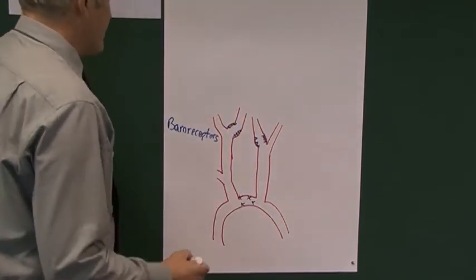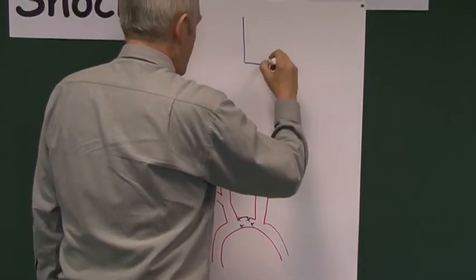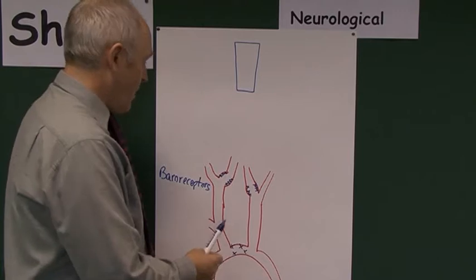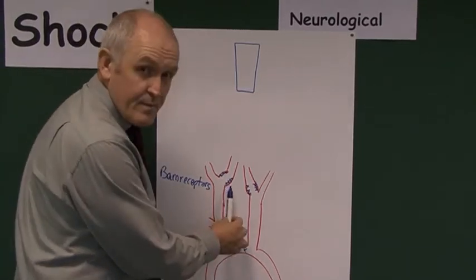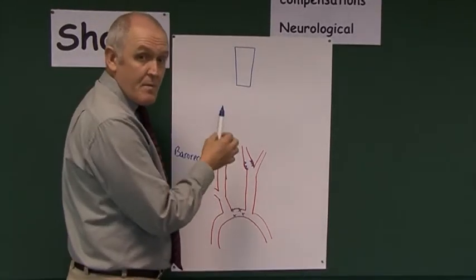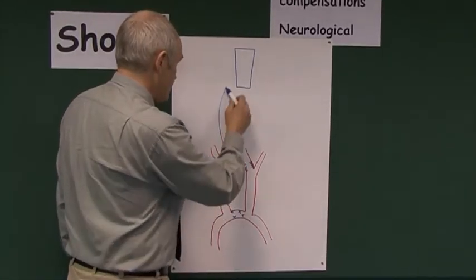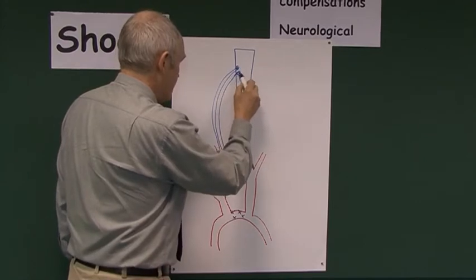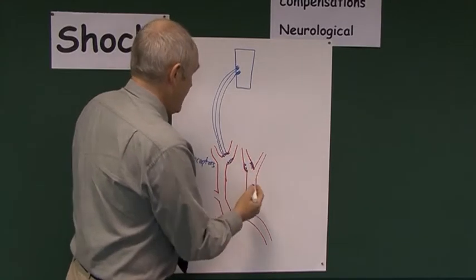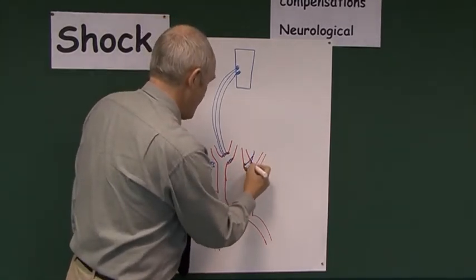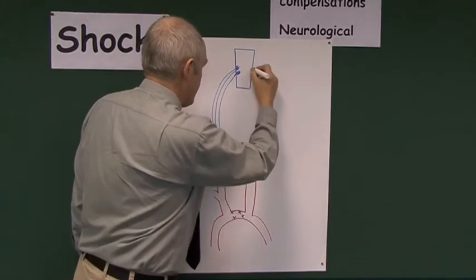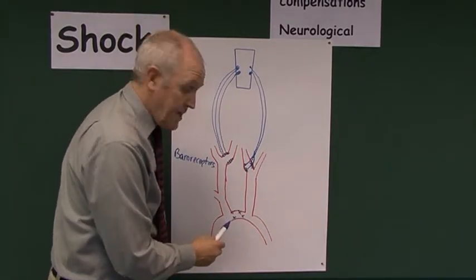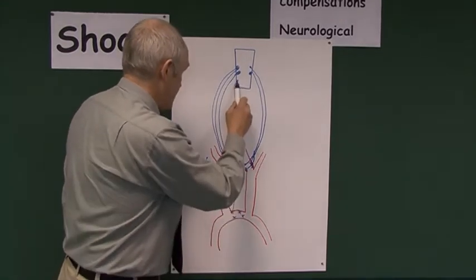The baroreceptors detect the pressure of the blood going through the carotid arteries as it goes up into the brain. Further up we have the brain stem — the medulla oblongata. If blood pressure starts to drop, that drop is detected by these baroreceptors, which send impulses up in sensory nerves to the medulla oblongata. There are also sensory nerves going all the way up from the arch of the aorta to the medulla oblongata.